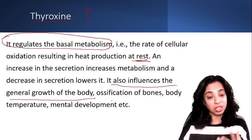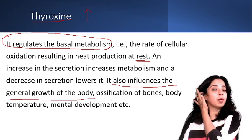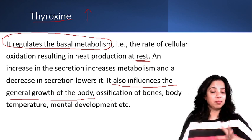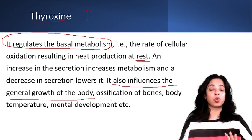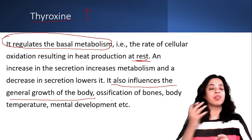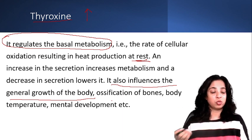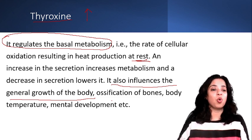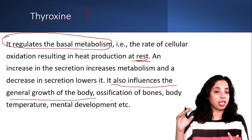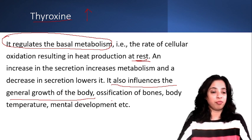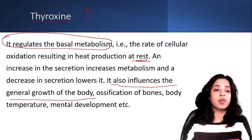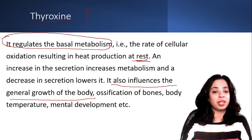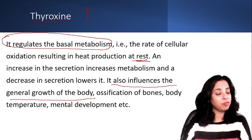Thyroxine also influences the general growth of the body. As seen in textbooks with the example of sheep: one sheep grows normally, but in the other sheep the thyroid has been removed, so thyroxine is not released and the body does not grow — it becomes a dwarf. So thyroxine's functions are: regulating basal metabolism, influencing general growth, ossification of bones, body temperature maintenance, and maintenance of mental development.